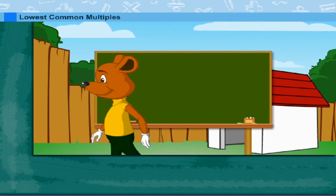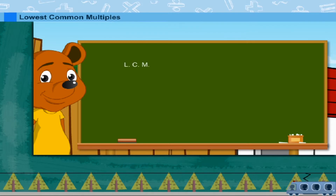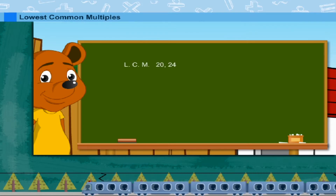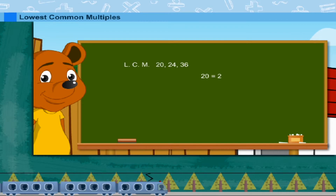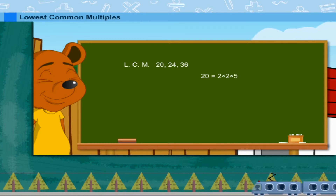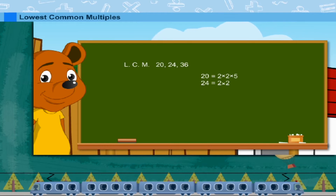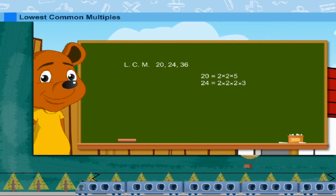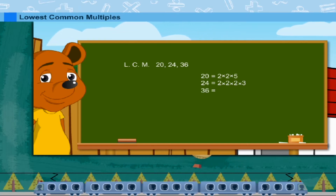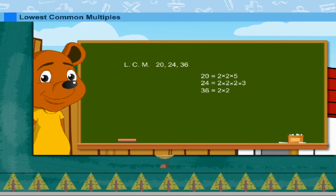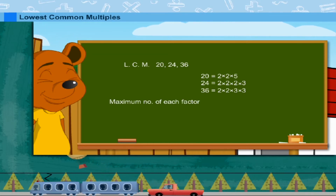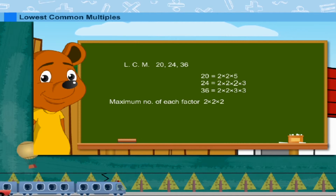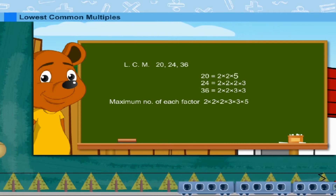Lowest Common Multiple. Toby now works on the Least Common Multiple of 20, 24, and 36. He writes the factors of 20 as 2 × 2 × 5, the factors of 24 as 2 × 2 × 2 × 3, and the factors of 36 as 2 × 2 × 3 × 3.